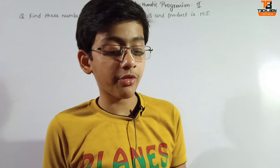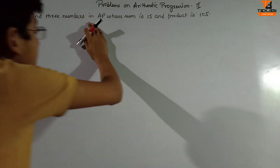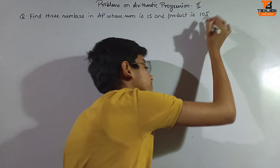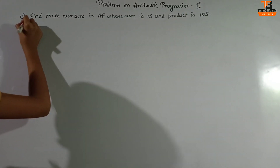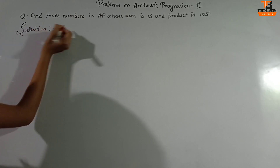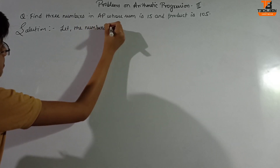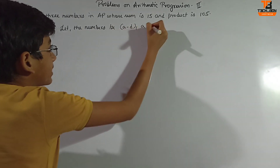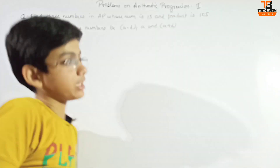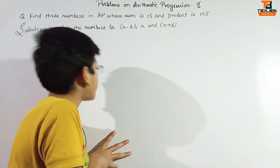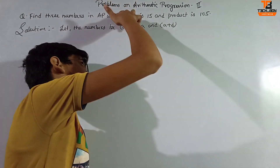Moving to question number two: find three numbers in AP whose sum is 15 and product is 105. Let the numbers be a−d, a, and a+d. This is the standard assumption when three AP numbers are required.